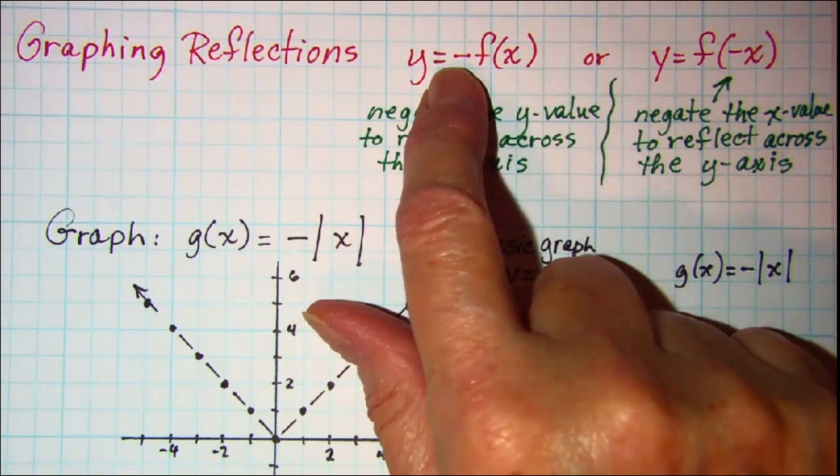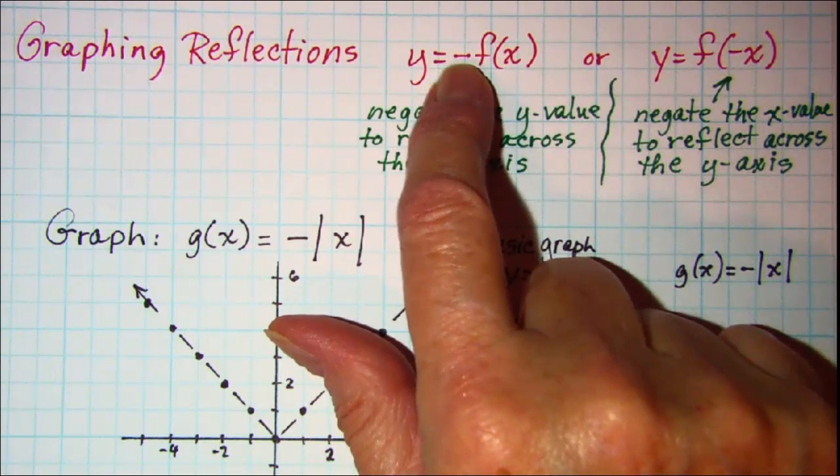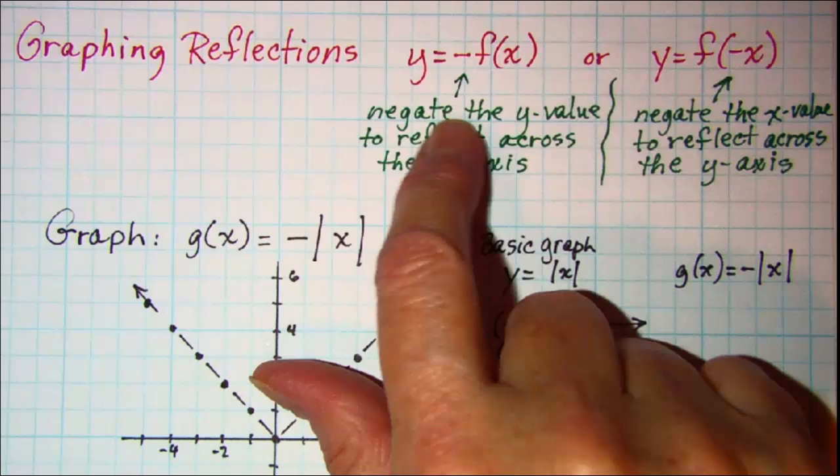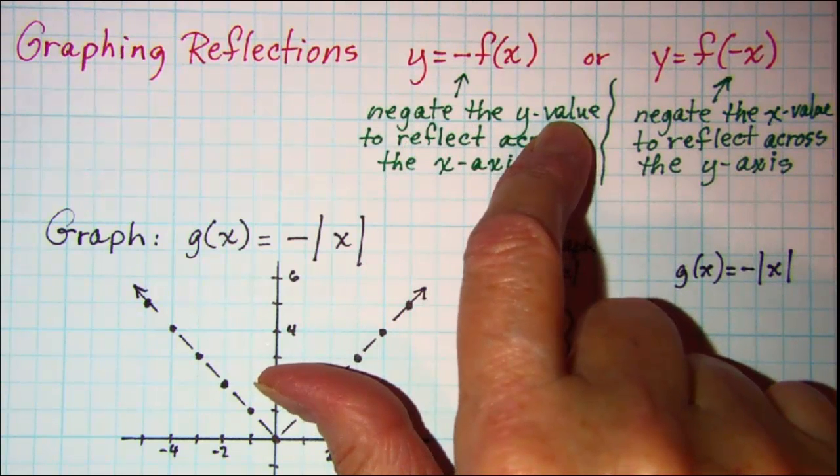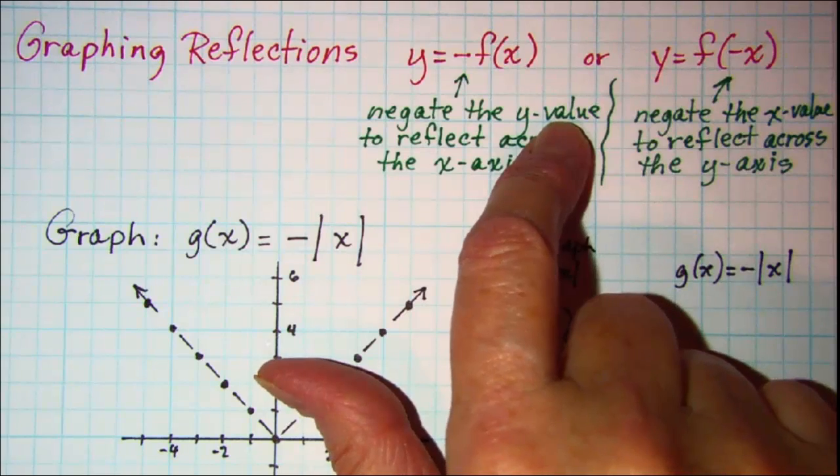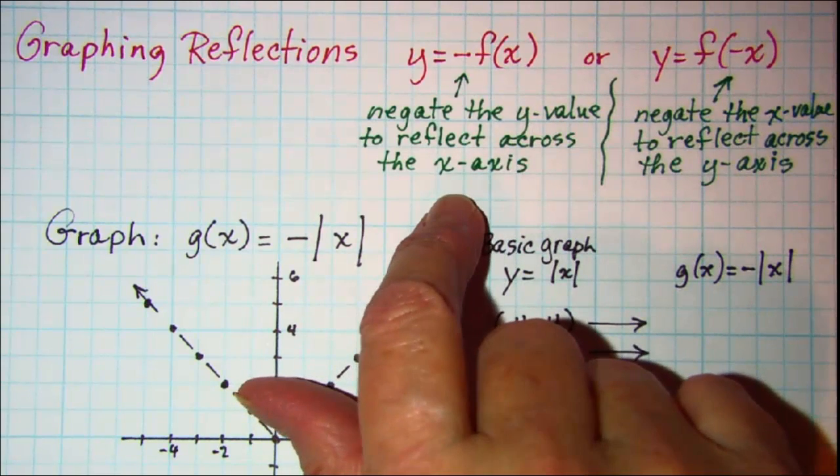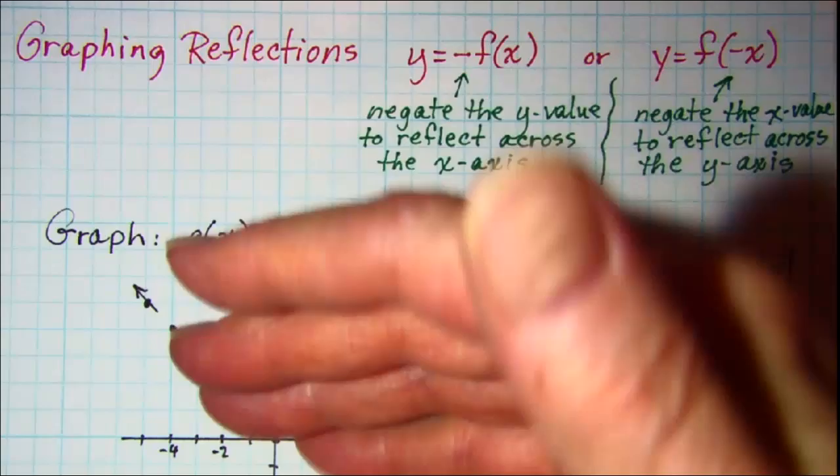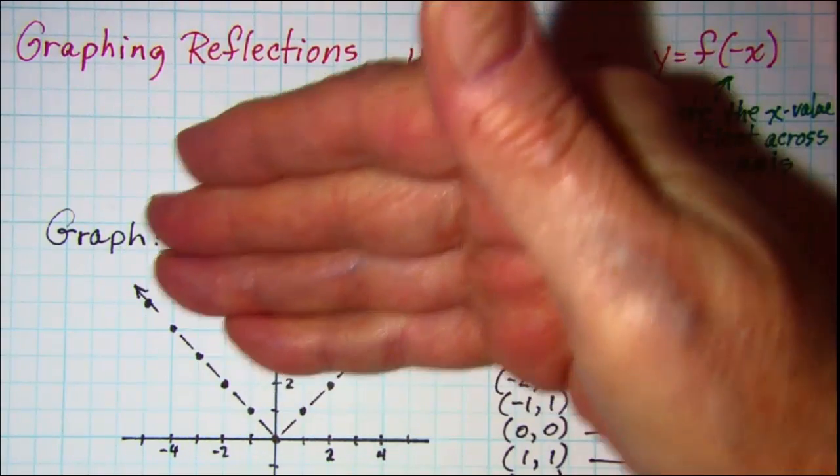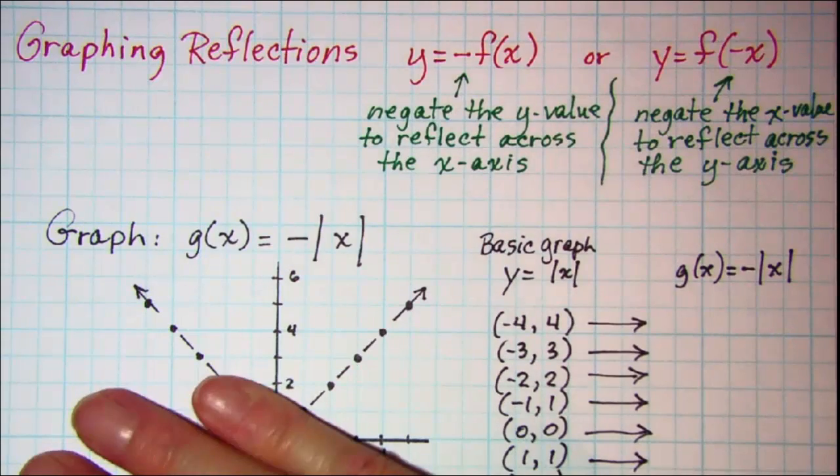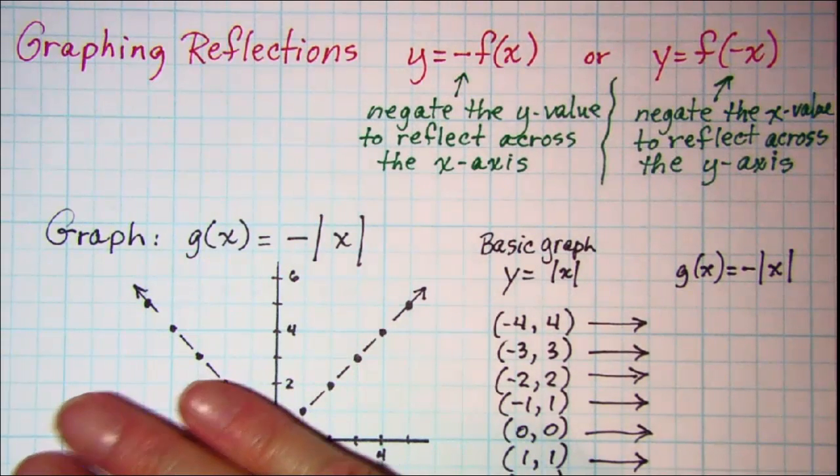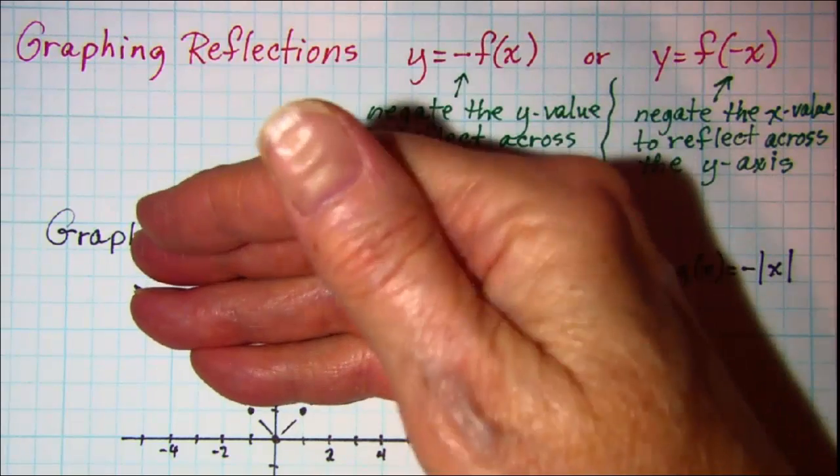If you see your negative out in front of the f of x, that means that you're negating the y value, and to negate the y value means that you're reflecting across the x-axis. So you may possibly be going from a positive y value to a negative y value or from a negative y value to a positive y value.